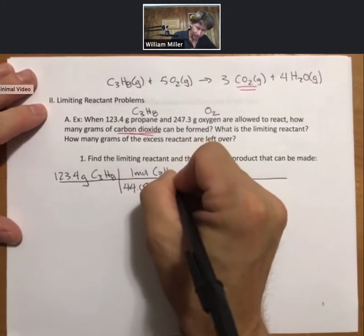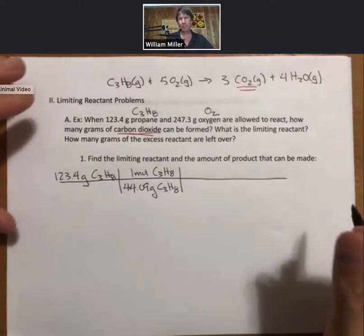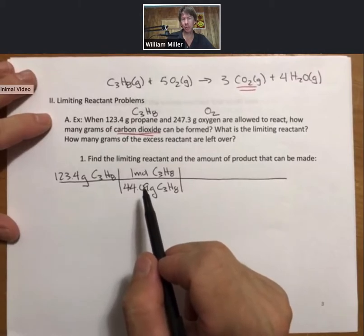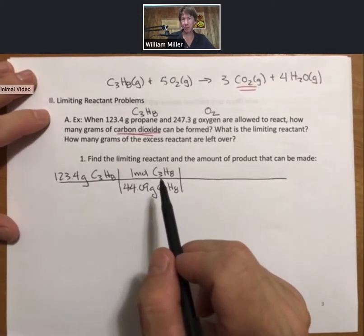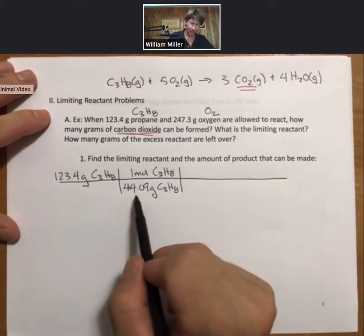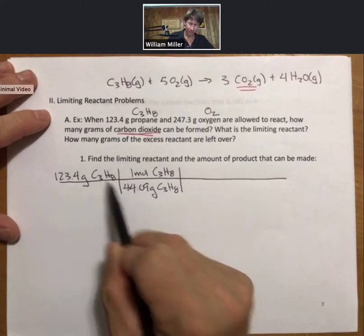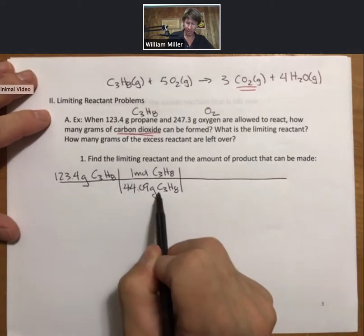And in the picket fence, my technique for doing unit conversions and what we call stoichiometry or reaction stoichiometry unit conversions, I put the molar mass here with grams on the bottom so my grams of propane cancel. The next step is always a mole-to-mole conversion factor.